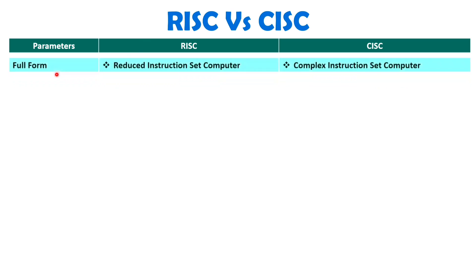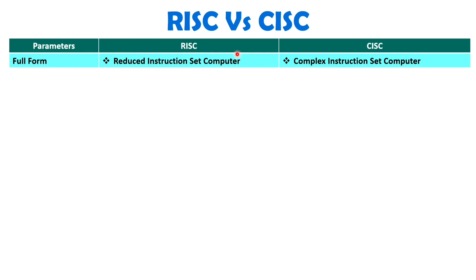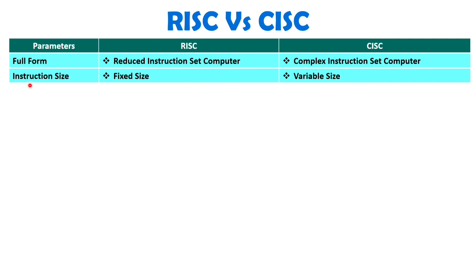With RISC you will have fewer instructions, and with CISC you will have many instructions along with complex ones. Regarding instruction size: with RISC it is fixed, while with CISC it varies with respect to the instruction. For complex instructions, the size will be more, and for simple instructions, the size will be less. So instruction size varies with respect to the operation in CISC, but is fixed across all instructions in RISC.